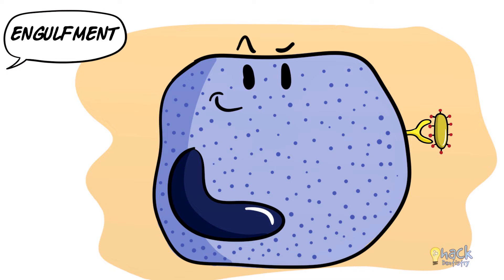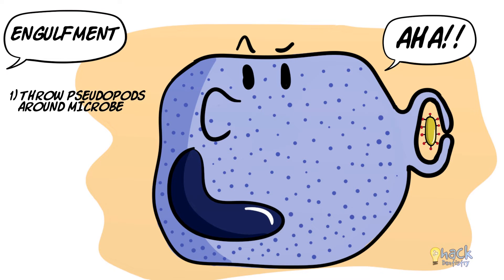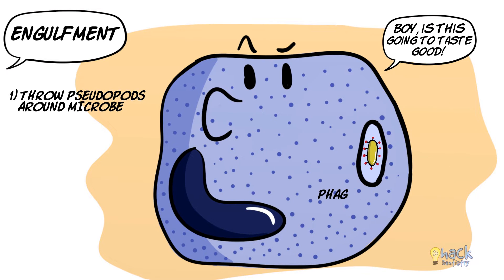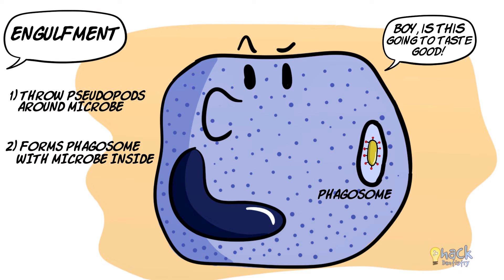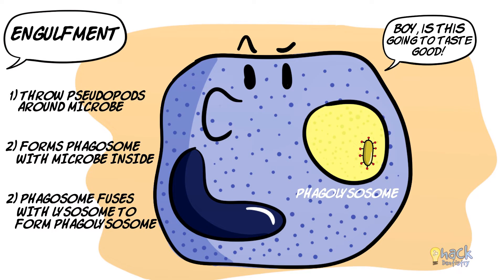After attachment to phagocyte receptors, the plasma membrane of the phagocyte extends through structures called pseudopods around the microbe, engulfing it. This part of the plasma membrane gets pinched off, forming a vesicle called the phagosome with the microbe inside. The phagosome then fuses with a lysosome inside the cell, forming the phagolysosome.